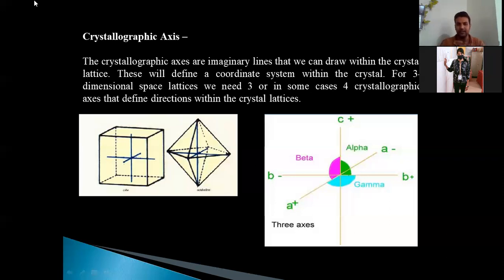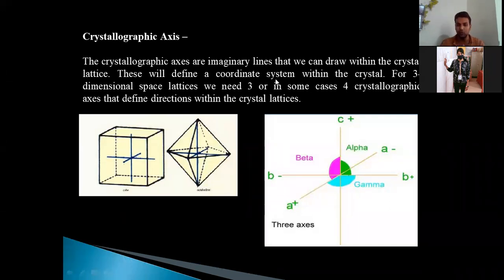In the picture, you can see two diagrams — a cube and an octahedron. In the cube, you can see the arrangement of the axes, and in the octahedron, a similar axis arrangement can be applied likewise. It ultimately depends upon the crystal what kind of axial arrangement it will show. Another diagram here explains the axial angles between them — you can see the axial angles alpha, beta, and gamma are indicated.